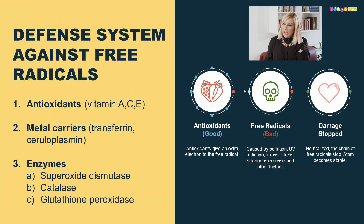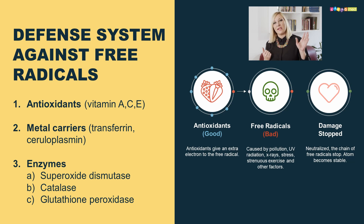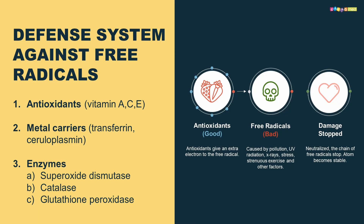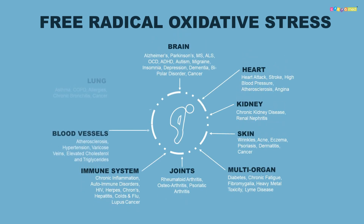When we are healthy, our defense system is strong enough to deal with free radicals. But when our mitochondria don't function properly and start producing excessive amounts of free radicals, and our antioxidant capacities are not strong enough, we have an imbalance between free radical production and our defense system. This is where oxidative stress occurs — now recognized as an underlying cause of almost all diseases.